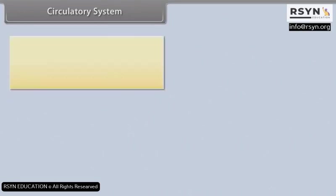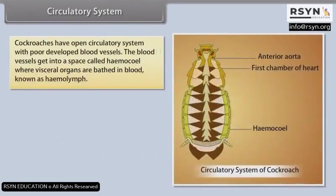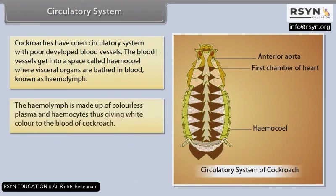Circulatory System: Cockroaches have an open circulatory system with poorly developed blood vessels. The blood vessels open into a space called the haemocoel, where vascular organs are bathed in blood known as haemolymph. The haemolymph is made up of colourless plasma and haemocytes, giving the blood of the cockroach a white colour.